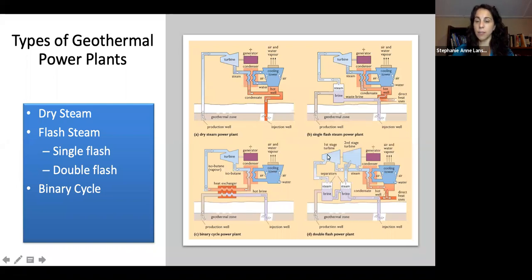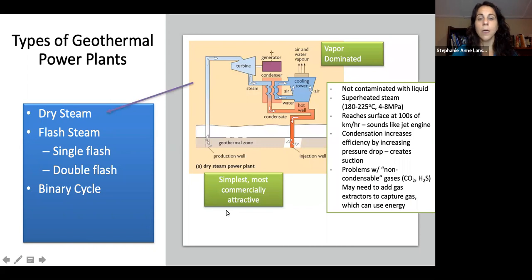A double flash steam power plant uses the steam brine for first and second stage turbines because we can get more energy out of it. Dry steam is the most commercially attractive—it's not contaminated with water, and when it reaches the surface, it's fast and sounds like a jet engine. We might have some condensation gas problems, but it's the hottest and most efficient.